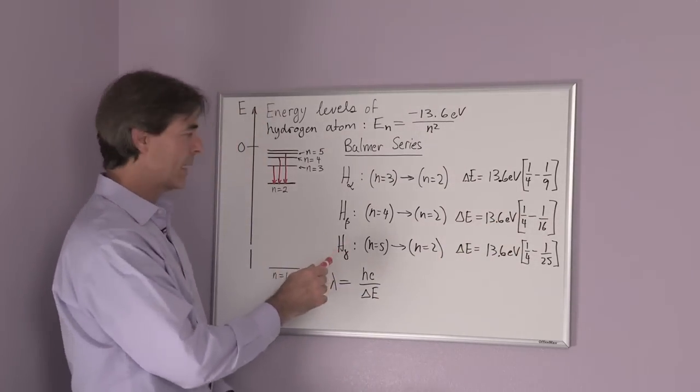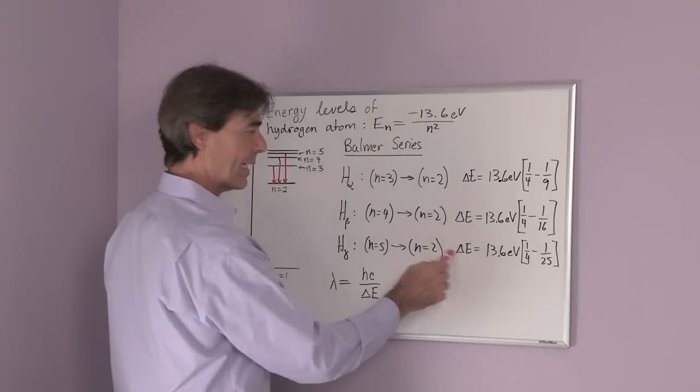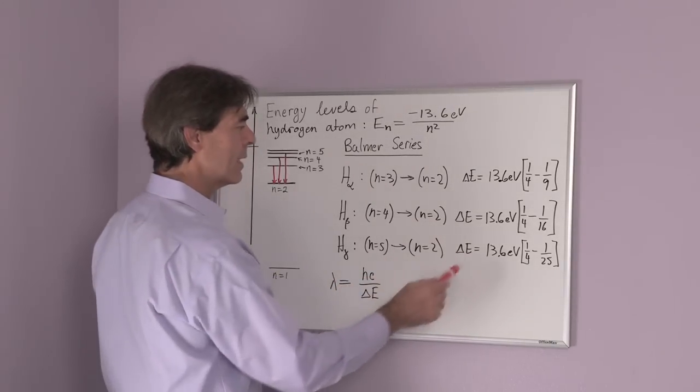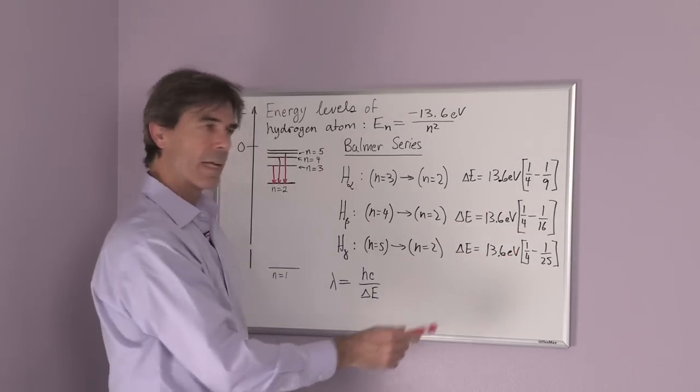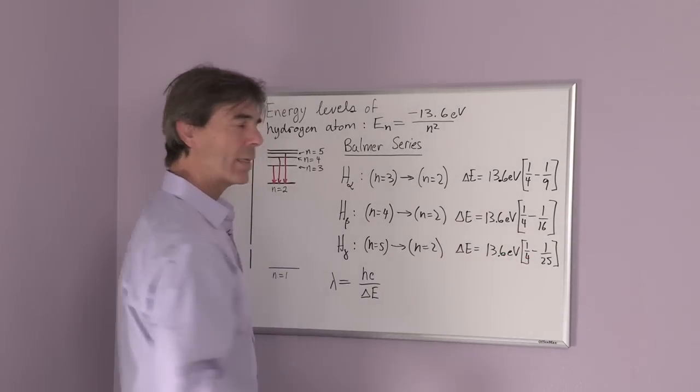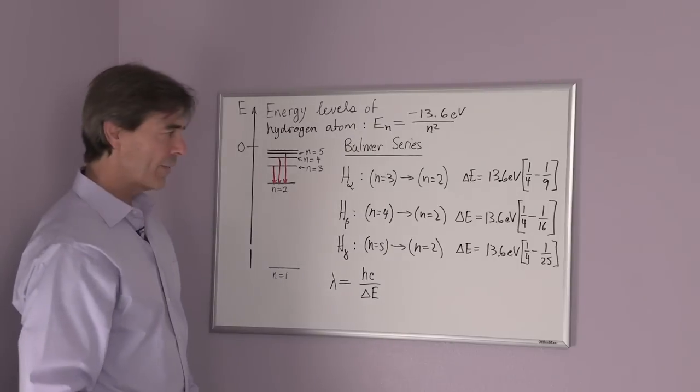Similarly, for H gamma, that's the third line in the Boehmer series, the energy difference is 13.6 electron volts times the difference of 1 over 2 squared and 1 over 5 squared.